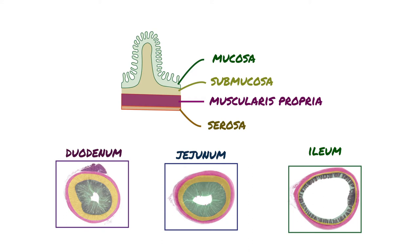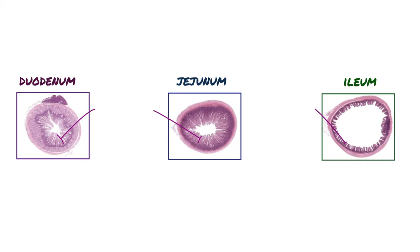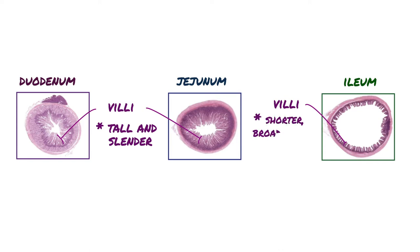Although each segment of the small intestine shares similar overall structures, there are still quite a few differences between each segment that can be seen with light microscopy. Even at low magnification, we can see that the finger-like projections, or villi, that extend into the lumen in both the duodenum and jejunum are very tall and slender when compared to the villi of the ileum, which are significantly shorter, broader, and flat-tipped.